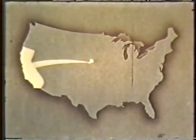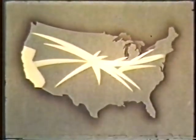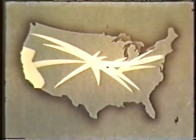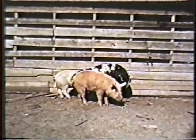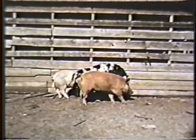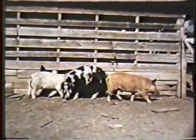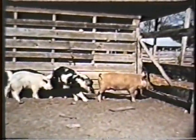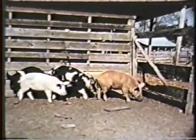Vesicular exanthema spread suddenly and like wildfire over the United States, appearing in swine and spreading consternation wherever it appeared. Vesicular exanthema, often nicknamed V.E., is an infectious, contagious disease of swine caused by a filterable virus.